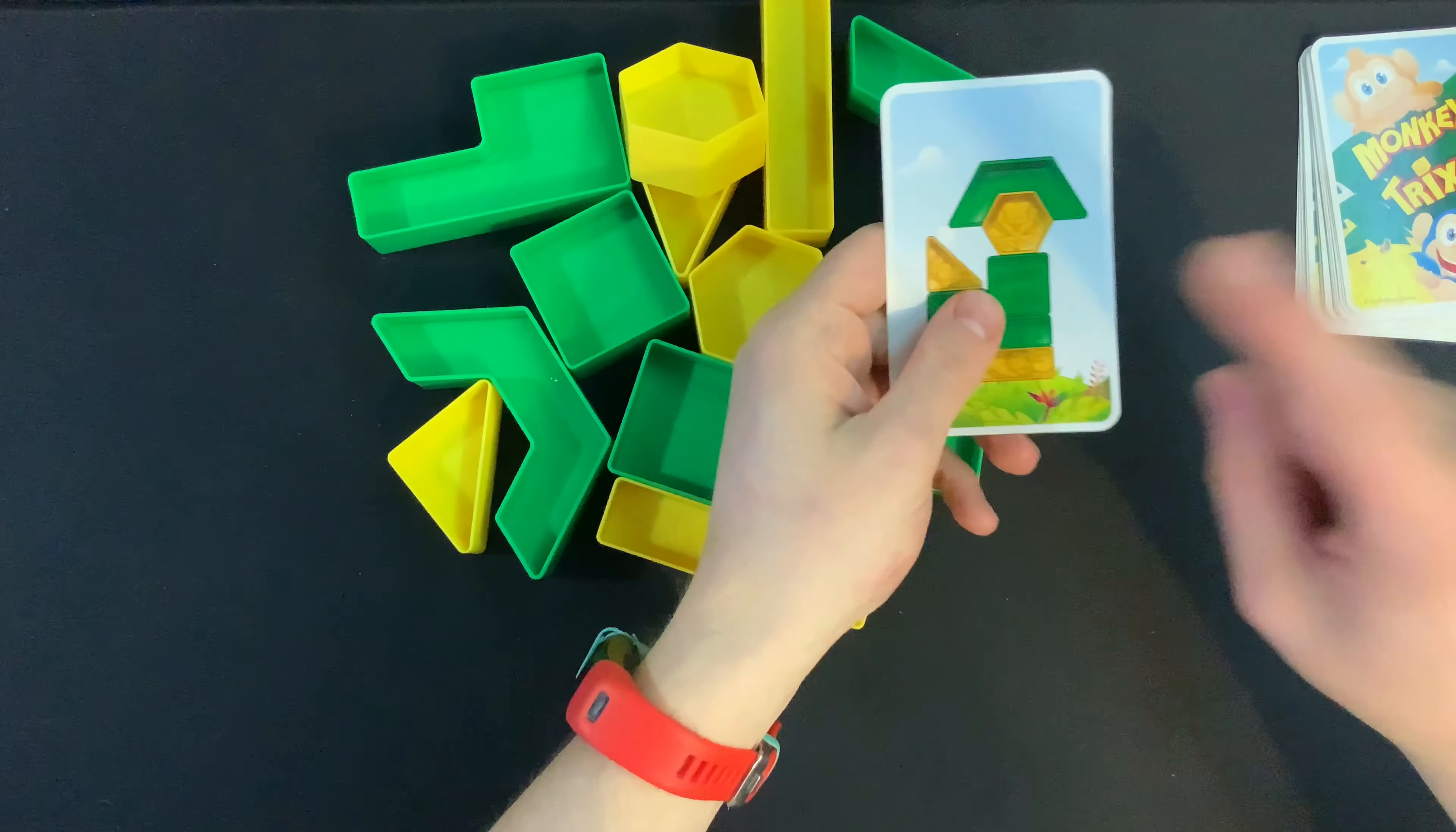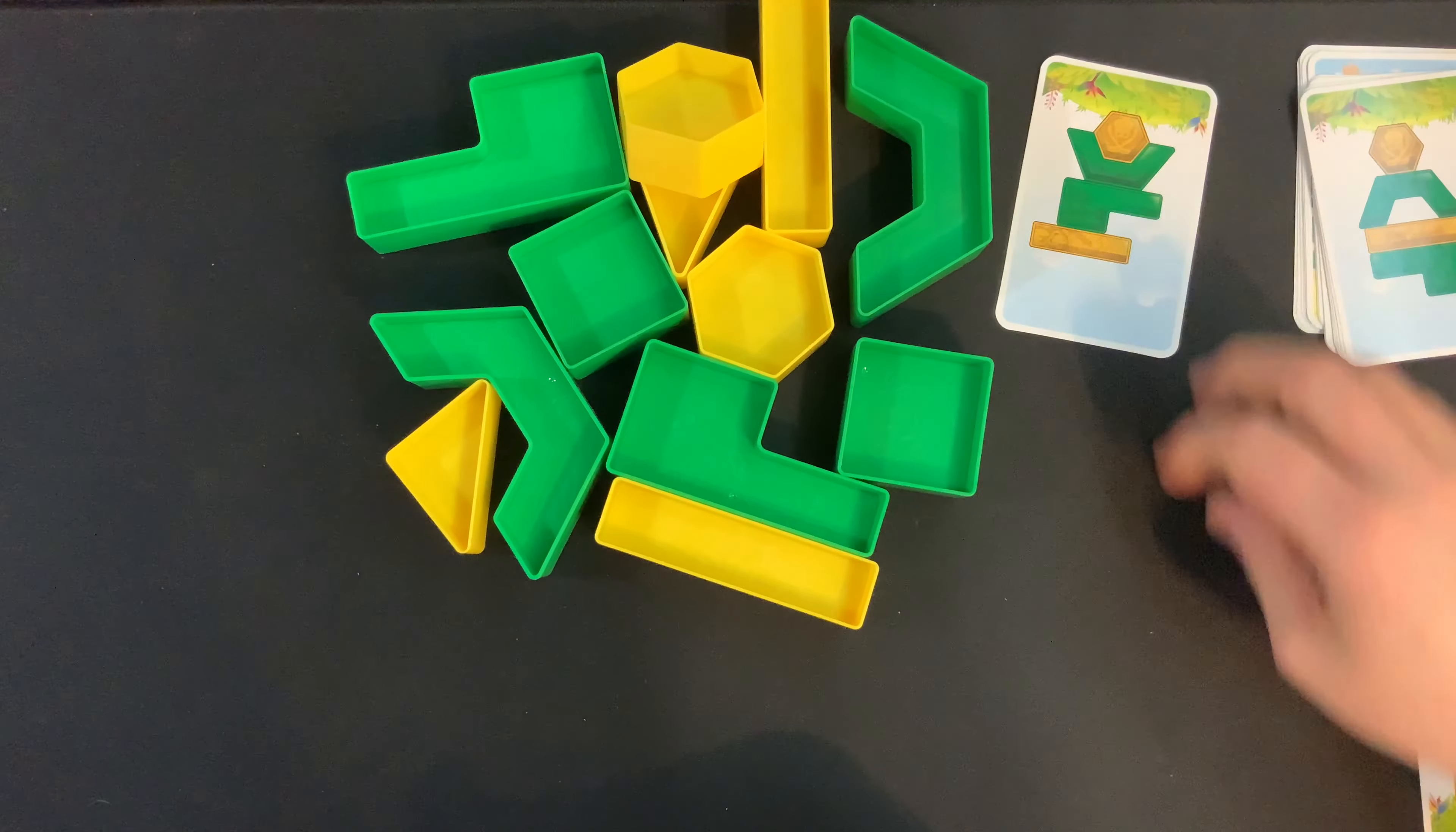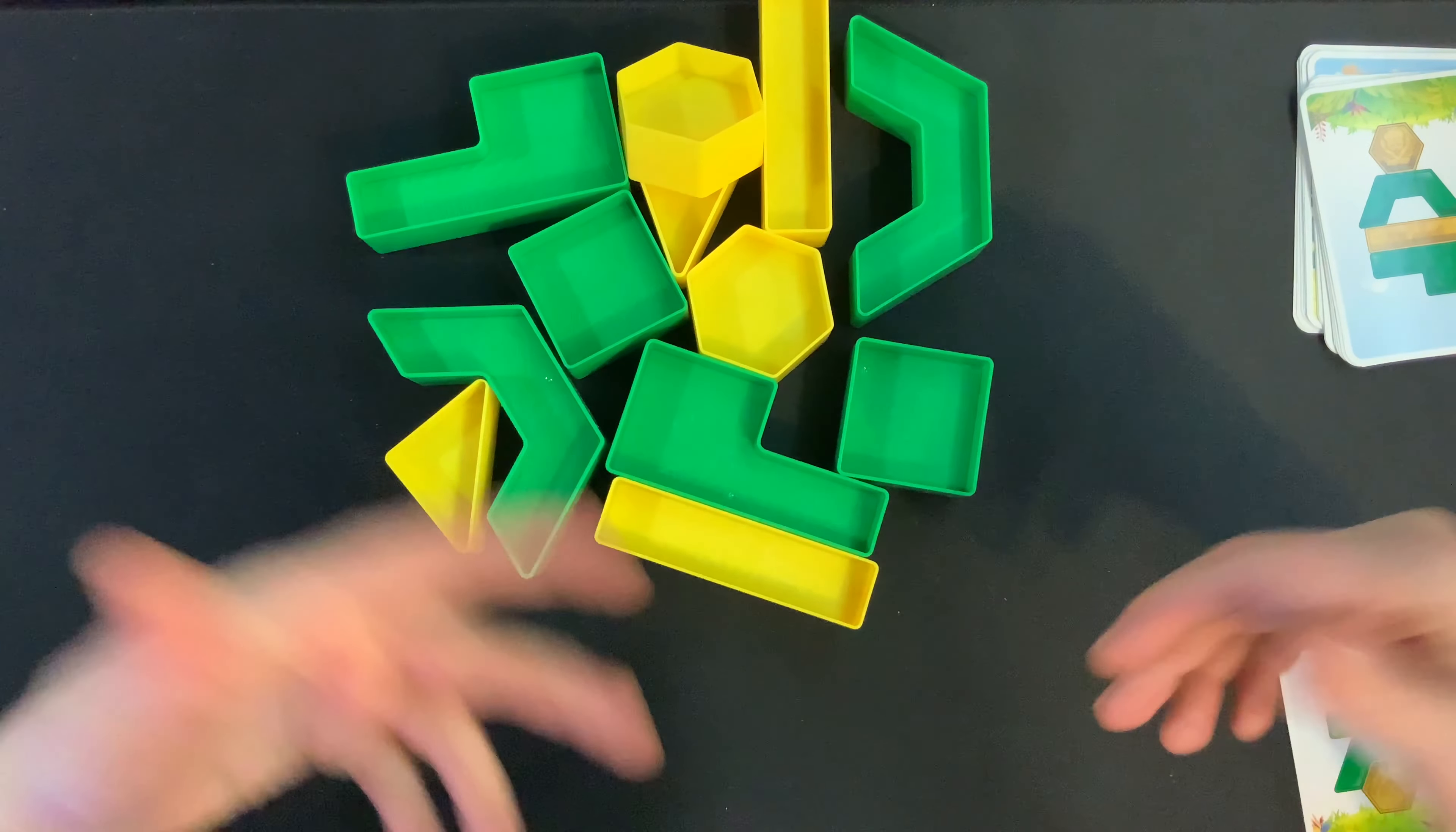The player that won that round is going to take this card and place it in front of them. Then the next player is going to flip over the next card, and you're going to rinse, wash, and repeat until one player has won three cards. Once they win three cards, they will be the winner of Monkey Tricks.